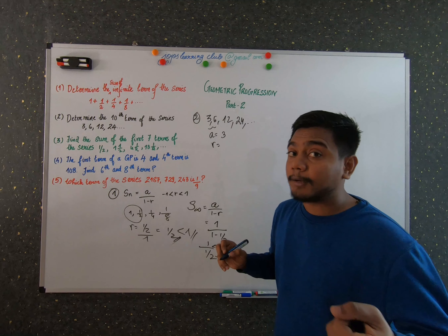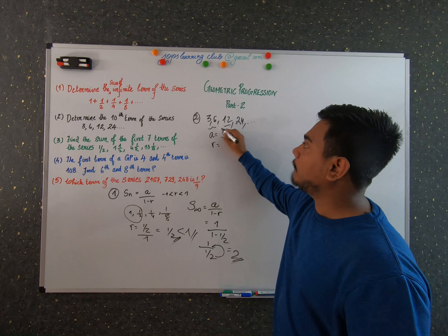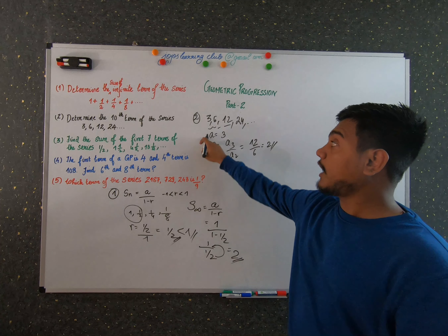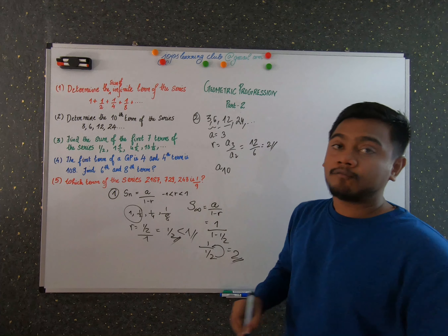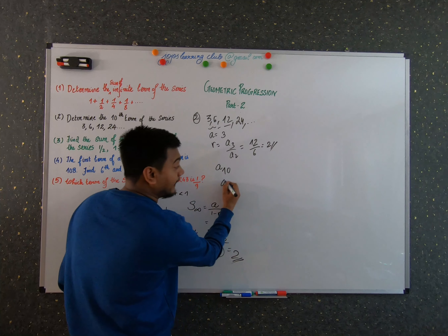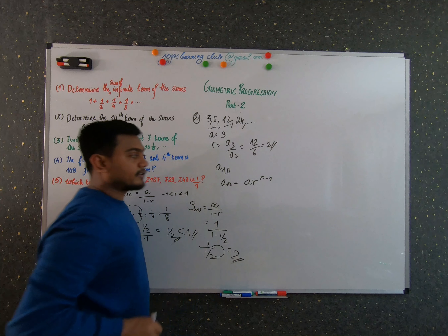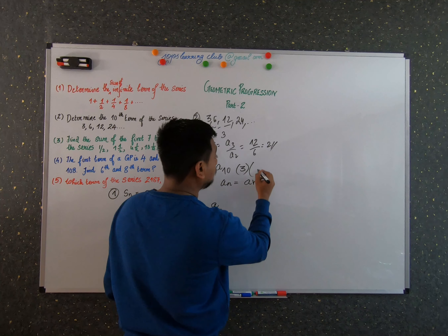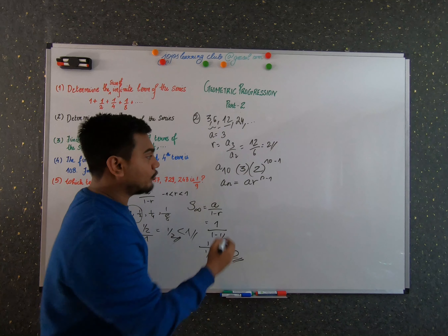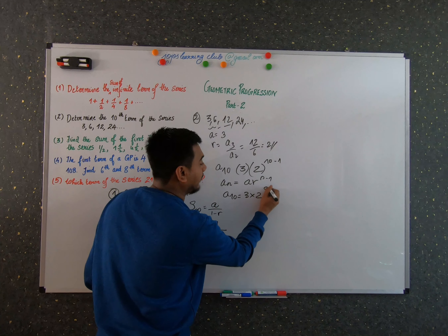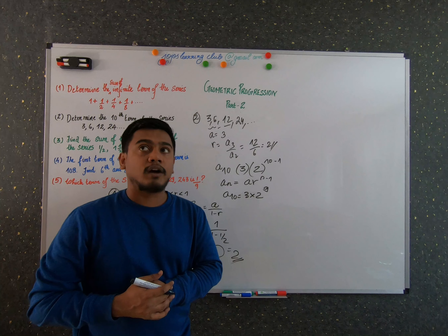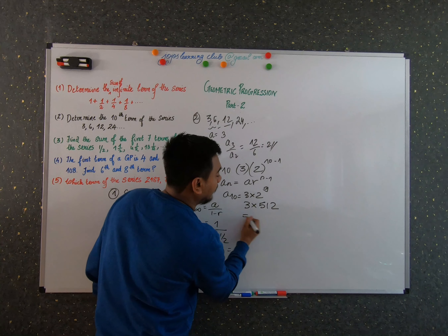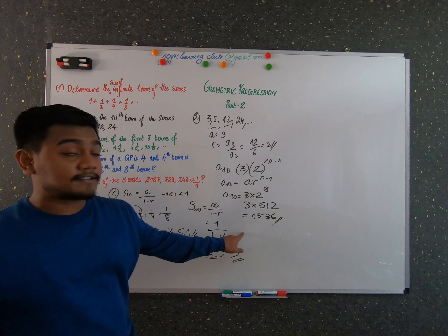The common ratio r = a3 / a2 = 12 / 6 = 2. To find the 10th term, use a_n = a × r^(n−1): a_10 = 3 × 2^(10−1) = 3 × 2^9. Since 2^10 = 1024, we get 2^9 = 512. So a_10 = 3 × 512 = 1536. The 10th term of this geometric sequence is 1536.